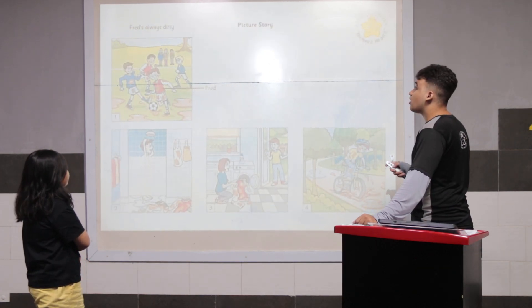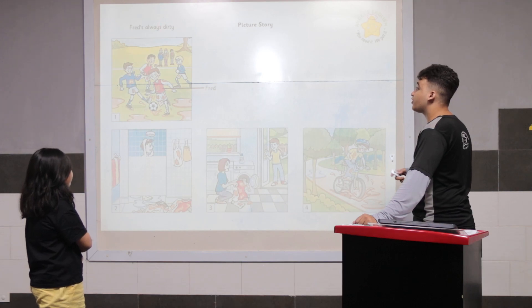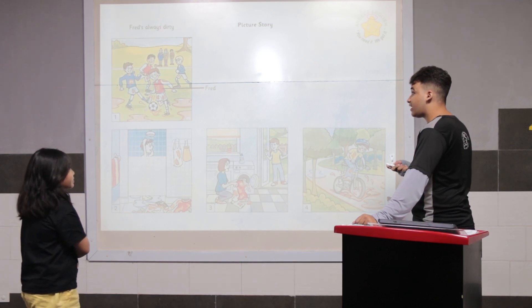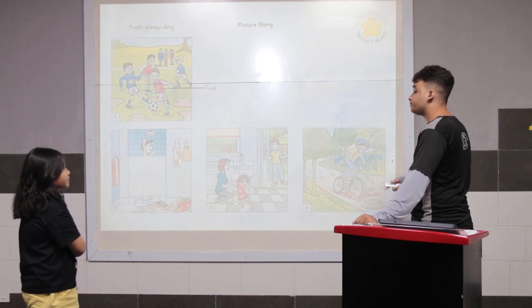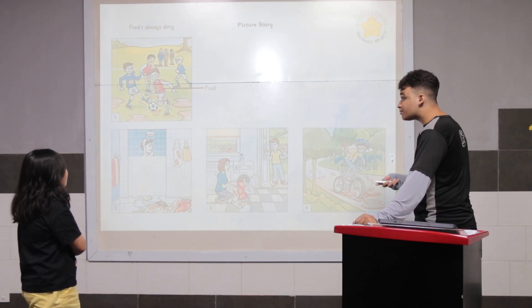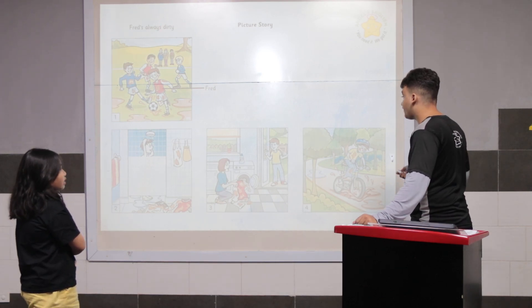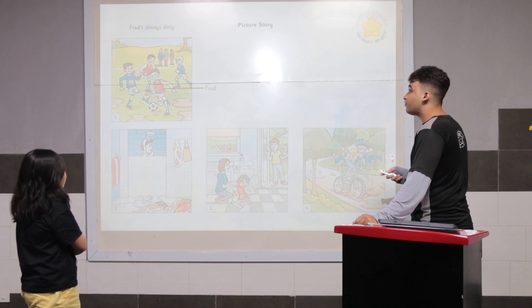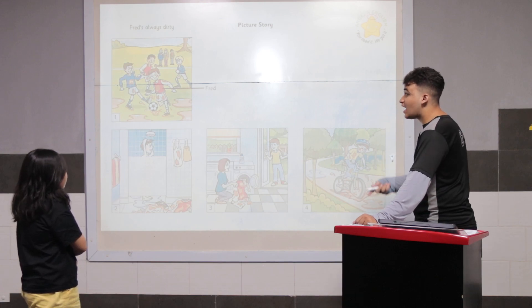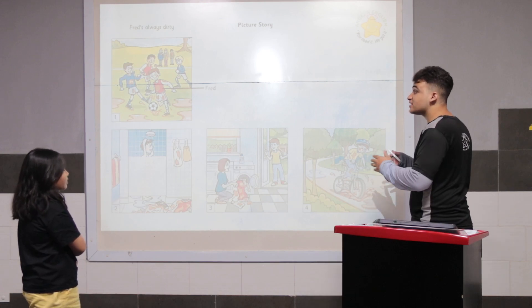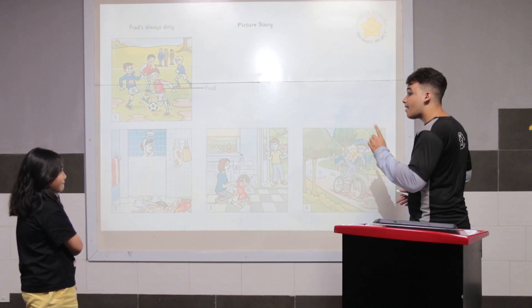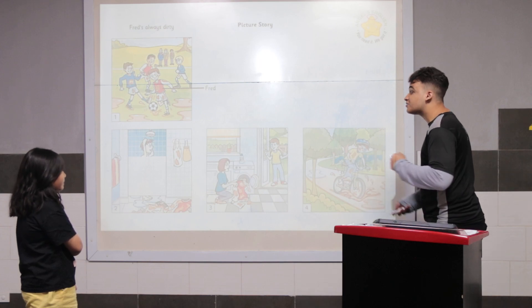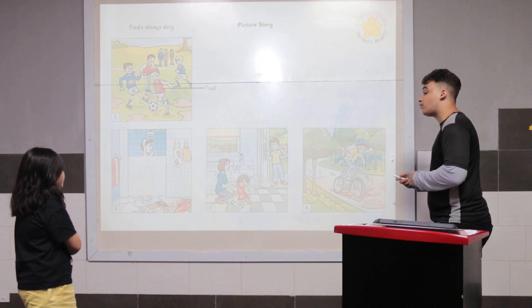This story is called Fred's Always Dirty. I will explain picture one. You explain two, three, and four. In picture one, Fred is playing soccer and having lots and lots of fun, but he's very dirty. Can you explain two, three, and four for me?